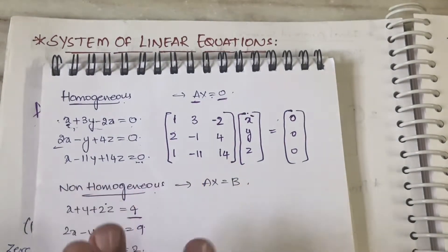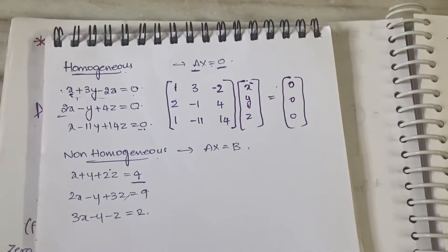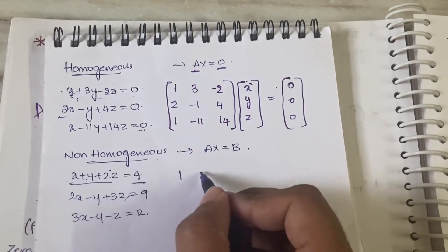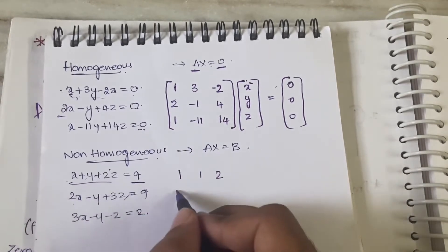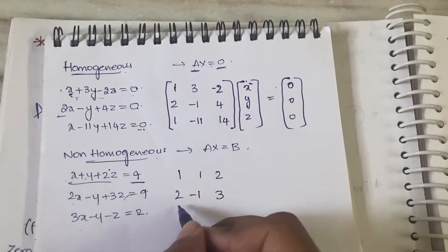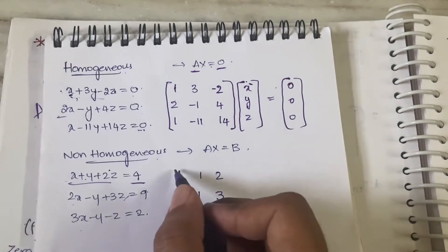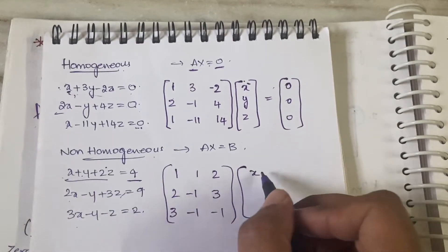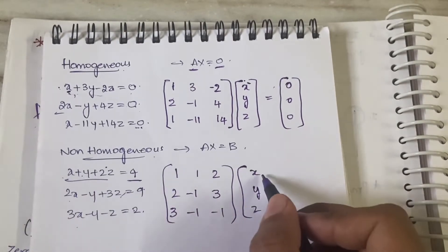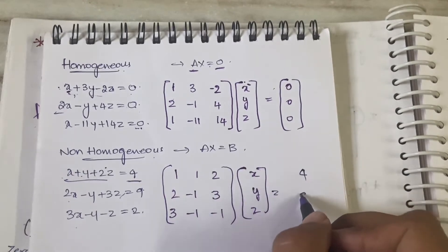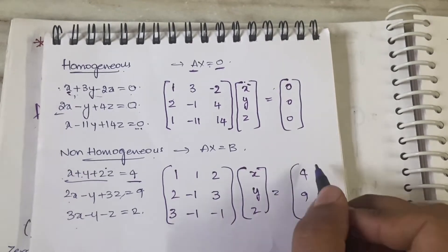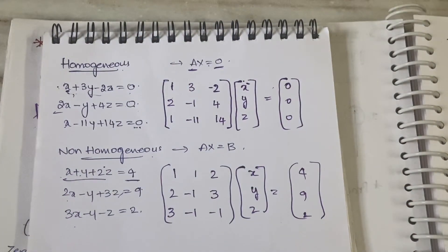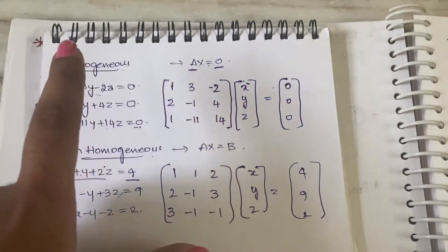For non-homogeneous, the coefficient matrix is written the same way: 1, 1, 2; 2, -1, 3; 3, -1, -1. The variable matrix is x, y, z. And instead of zero, the right-hand side equals the constant matrix: 4, 9, 2. That is how you write matrices for homogeneous and non-homogeneous cases.